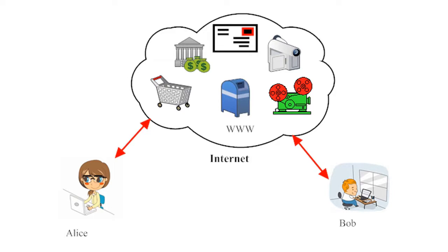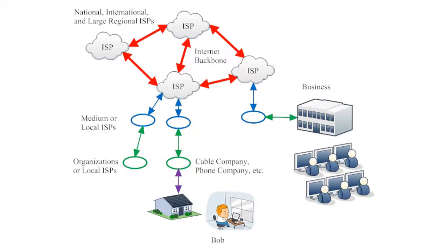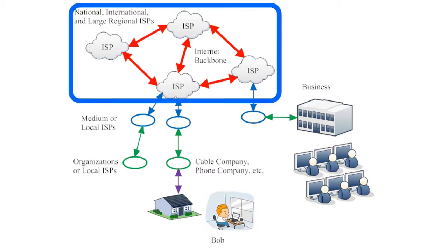Let's take a closer look at the structure of the internet so the cloud is not so mysterious. This next illustration begins to show how the internet is networked together in a little more detail. It shows how the internet is arranged loosely into a hierarchy. At the top of the hierarchy is what is referred to as the backbone of the internet.